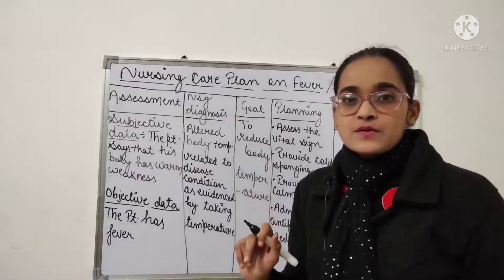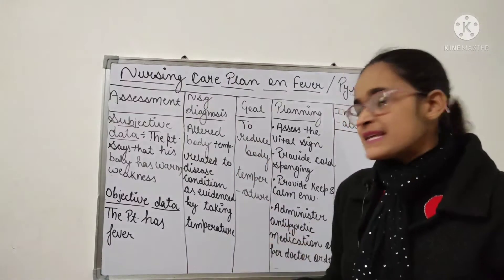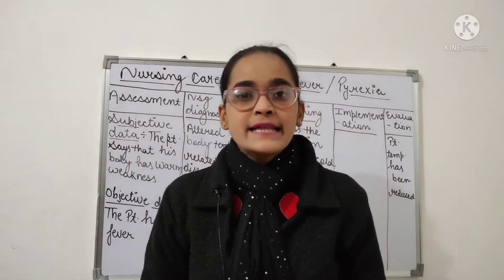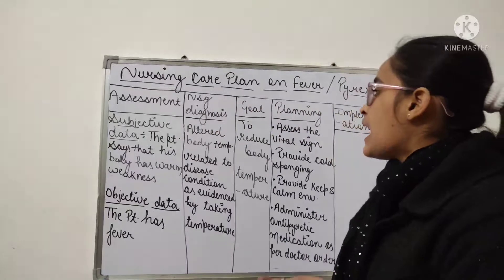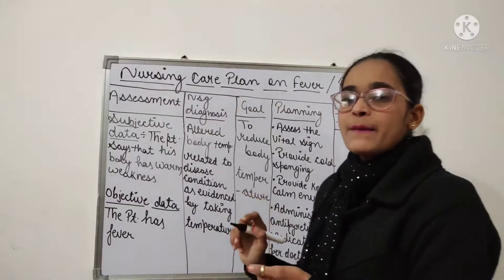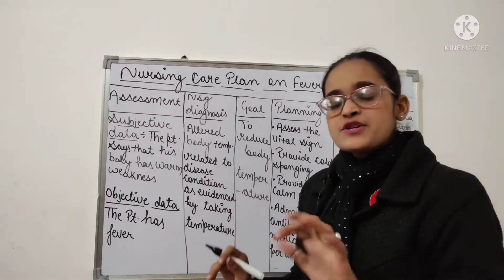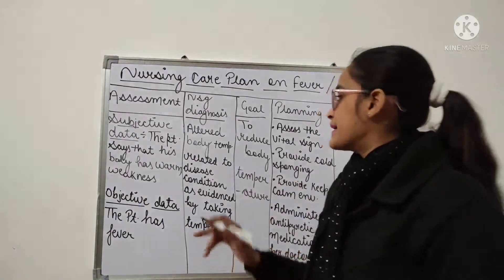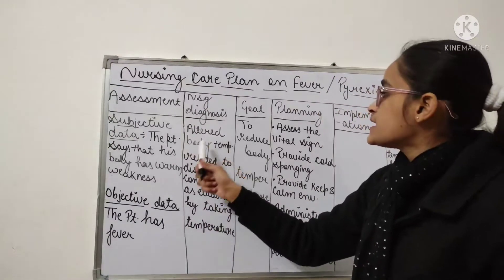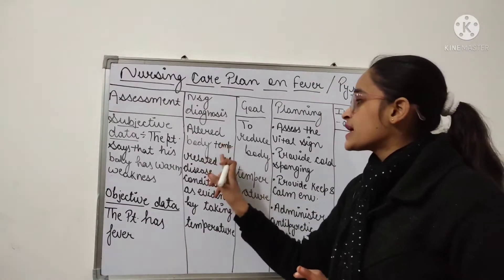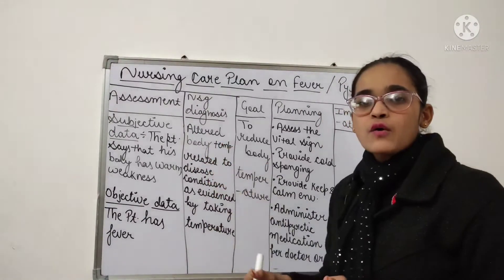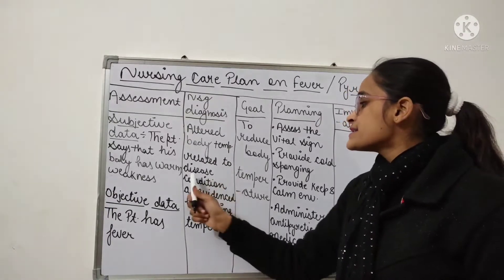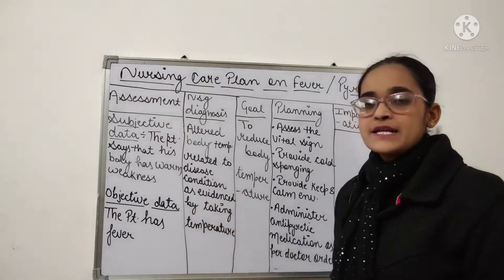Next, we have nursing diagnosis. Now we have to know that the patient has fever. The nursing diagnosis is: altered body temperature — meaning the body temperature is increased — related to disease condition.